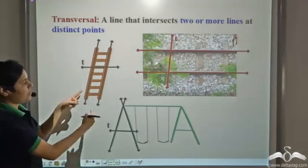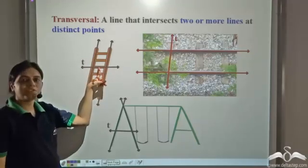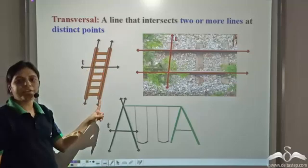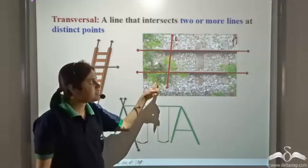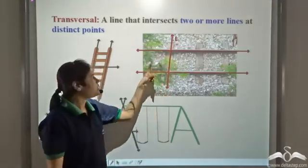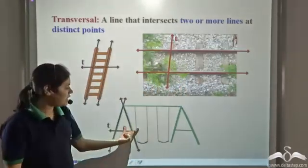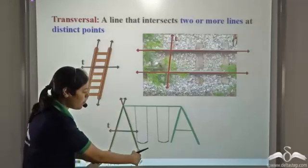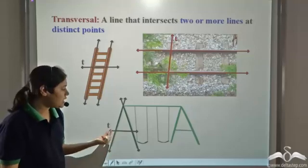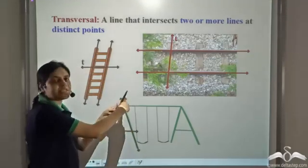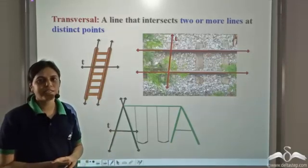If we consider the ladder again, each step of the ladder is a transversal — it intersects the sides of the ladder, so T is the transversal. For railway tracks, T is also a transversal. In both these cases the lines are non-intersecting. But if we consider a swing, the two supports of the swing are intersecting lines, and T is the transversal of those intersecting lines. So, a transversal intersects two or more lines at distinct points.